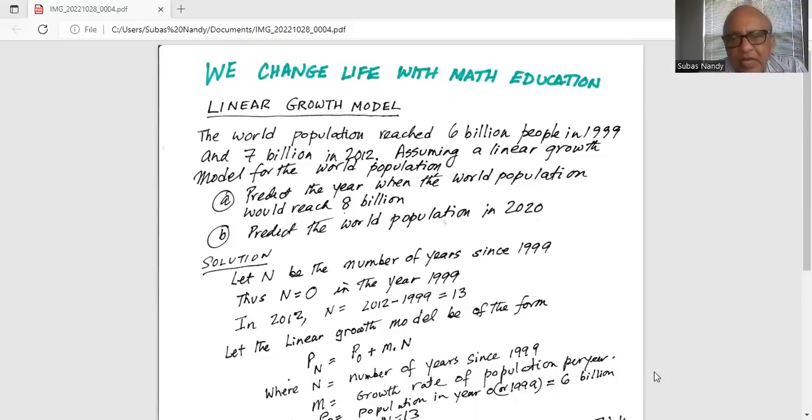Solution. Let n be the number of years since 1999. Thus, n is equal to 0 in the year 1999. In 2012, n is equal to 2012 minus 1999, which is 13.